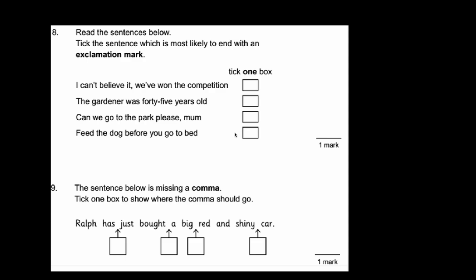Number 8. Read the sentences below. Tick the sentence which is most likely to end with an exclamation mark. I can't believe we've won the competition. The gardener was 45 years old. Can we go to the park please mum. Feed the dog before you go to bed. So looking at these ones we can rule a few out straight away. The gardener was 45 years old. That's just a statement. That's not very interesting. We wouldn't be exclaiming that. Can we go to the park please mum. That's a question. So definitely not an exclamation mark.